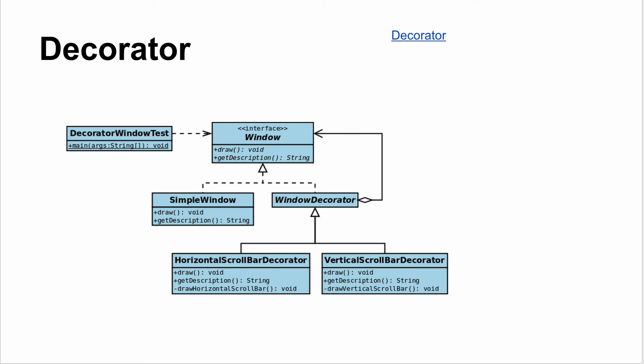The Decorator pattern: say you're building a GUI with a window, and some windows have a horizontal scrollbar, some have a vertical scrollbar, some have both, and maybe a title bar or 3D shadow. You want to create any combination of these. You can't create one class for every possible combination — with 10 features that's 2^10 possible combinations, which explodes. You don't want that many classes.